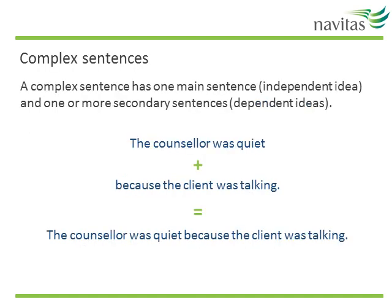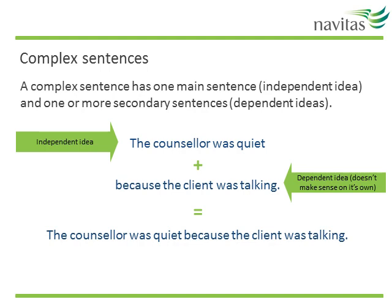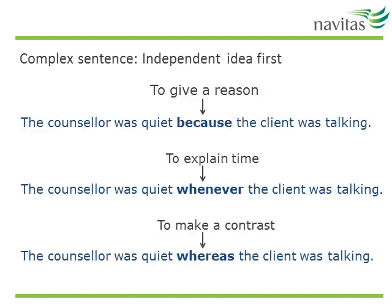Another type of sentence is a complex sentence. A complex sentence has one main sentence — the independent idea — and one or more secondary sentences — the dependent ideas. In this example we have 'The counsellor was quiet', which is a complete sentence, and 'Because the client was talking', which doesn't make sense on its own because we don't know what 'because' relates to. When we join the sections together we get 'The counsellor was quiet because the client was talking', which makes sense and is known as a complex sentence. Complex sentences can be formed by putting the independent idea first. Notice that in these examples, with the independent idea first, you don't need a comma.